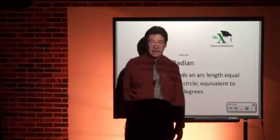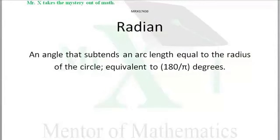Hi, Mr. X with glossary term radian. A radian is a measure of an angle that subtends an arc length equal to the radius of the circle.